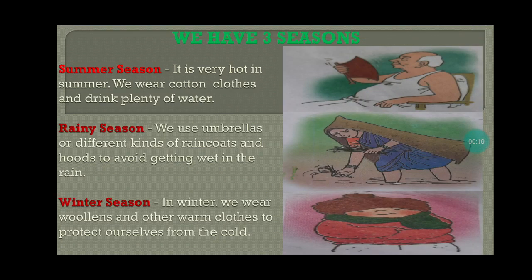We have 3 seasons: summer season, rainy season and winter season. It is very hot in summer. We wear cotton clothes and drink plenty of water. In rainy season, we use umbrellas or different kinds of raincoats and hoods to avoid getting wet. In winter, we wear woollens and other warm clothes to protect ourselves from the cold.